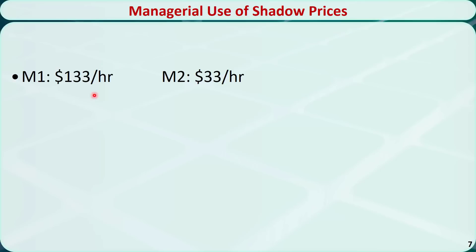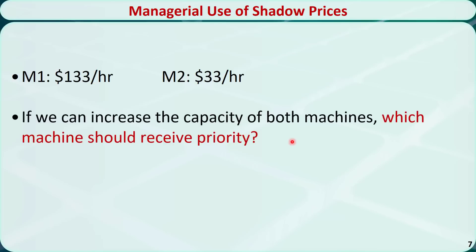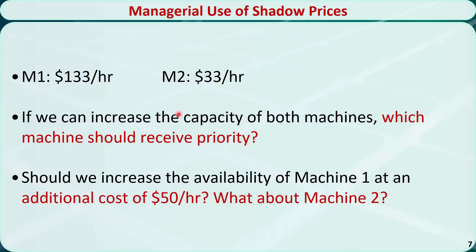Now we have the shadow prices of both machines. Based on these, let's answer some questions. First: if we can increase the capacity of both machines, which should receive priority? The answer is machine 1, because the increased profit from machine 1 ($133/hr) is much higher than from machine 2 ($33/hr). Second: should we increase the availability of machine 1 at an extra cost of $50 per hour? Yes, because $133 is greater than $50, so we still make more money. What about machine 2? No — because $33 is less than $50, we would lose money and it is not worth it.